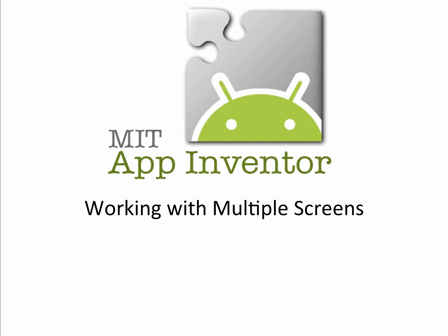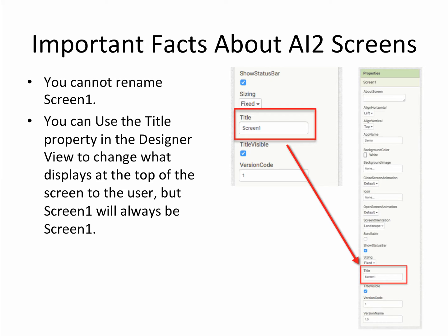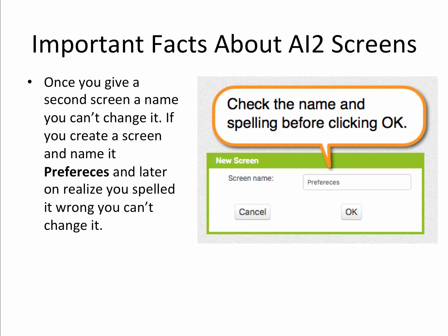Let's take a look at working with multiple screens in App Inventor. First, you automatically get a new screen called Screen One when you create a new app. You can't rename the actual name of the screen, but if you want something different to display in the title bar, you can change the title in the properties panel. When you create another screen, you can give it a name - make sure you spell it correctly because once you click OK, you can't go back and change the name.